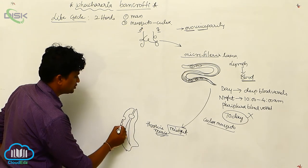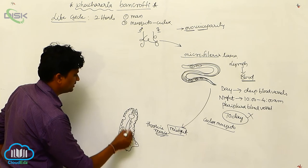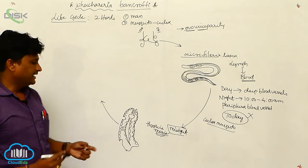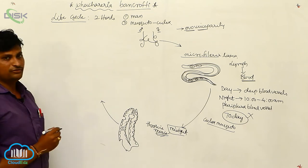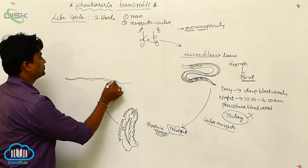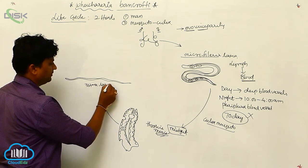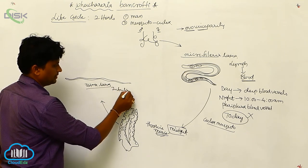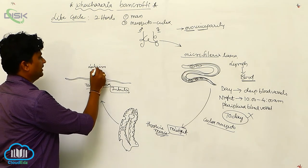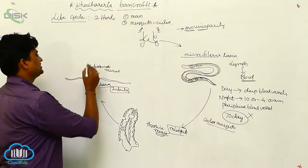In the thoracic muscles, the first stage of molting takes place, resulting in the formation of a special sausage-shaped larva. This sausage-shaped larva then undergoes another molt in the thoracic muscles, forming the third stage larva, which is highly infective and has a long structure. This third stage larva then migrates to the labium of the mosquito.